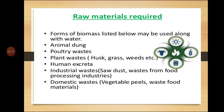All these types of waste — plant waste, animal waste, domestic waste, agricultural waste, municipal waste, forestry waste — are commonly used for biogas production.